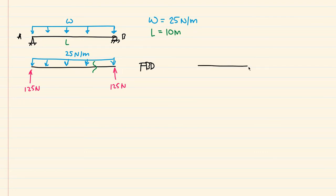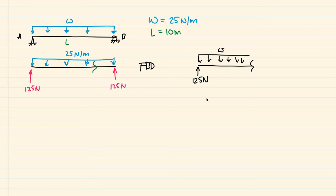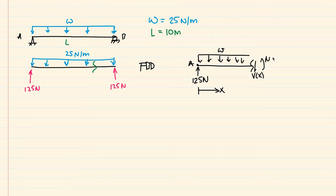Redrawing that beam with the cut: we have our 125 newtons at the reaction, and this distributed load W — 25 newton per meter — goes all the way to the cut. Our datum starts at point A, and any point along this cut is called x, so the cut is located a distance x from A. Our internal positive sign convention is: shear V(x) goes downward on the right side of the cut, and moment M(x) is counterclockwise.